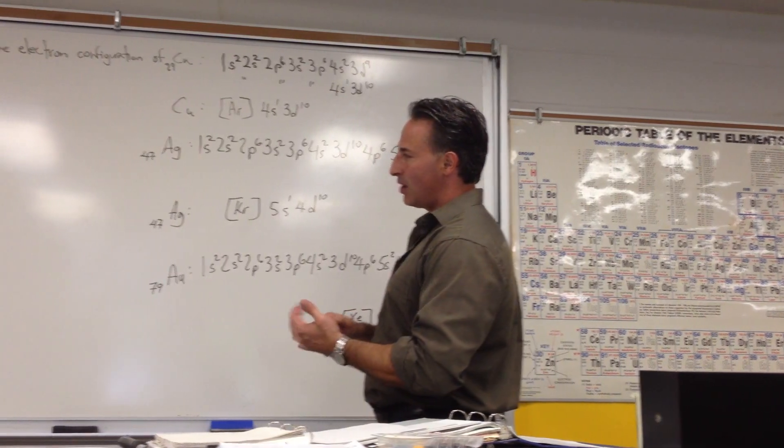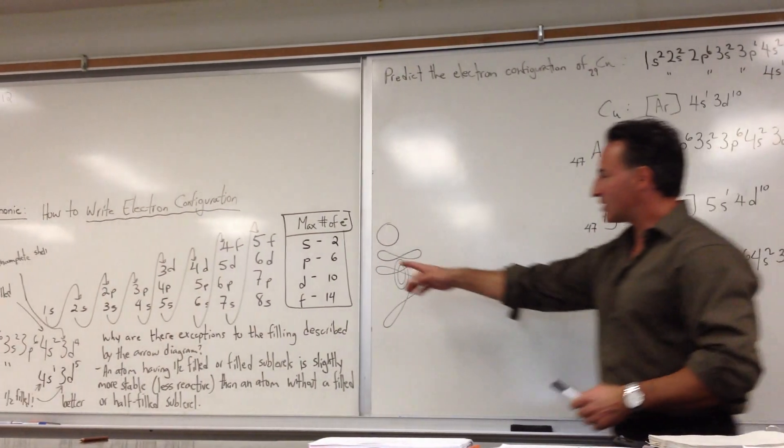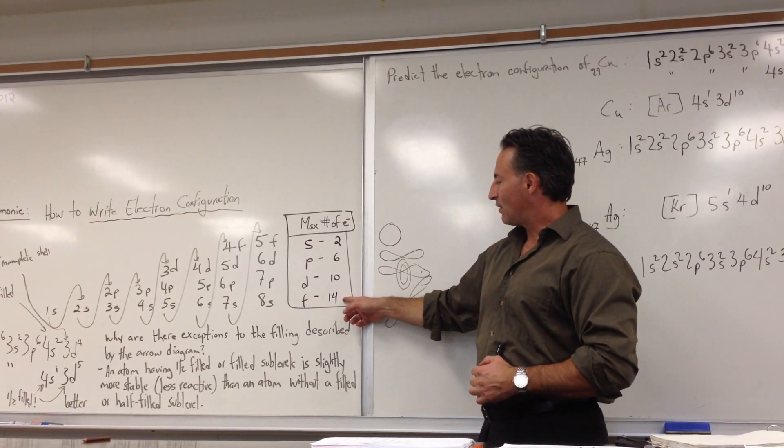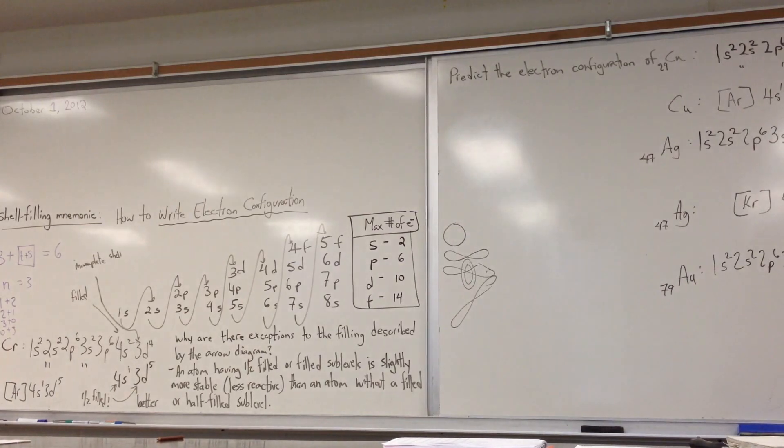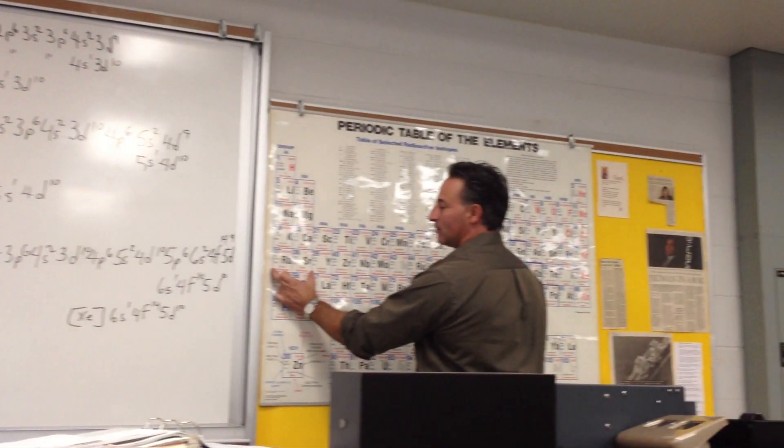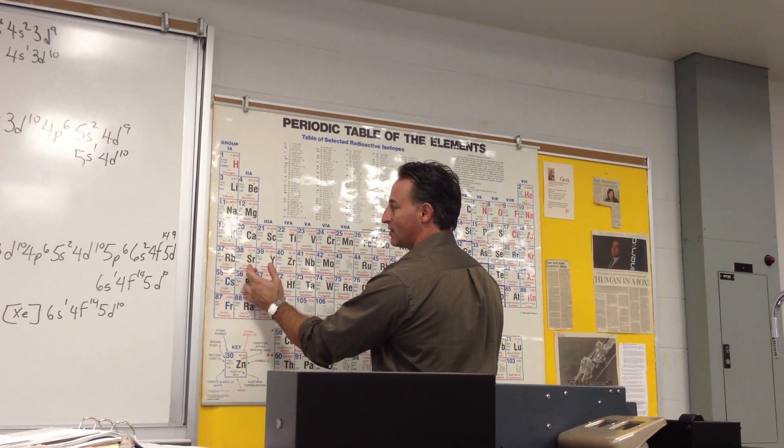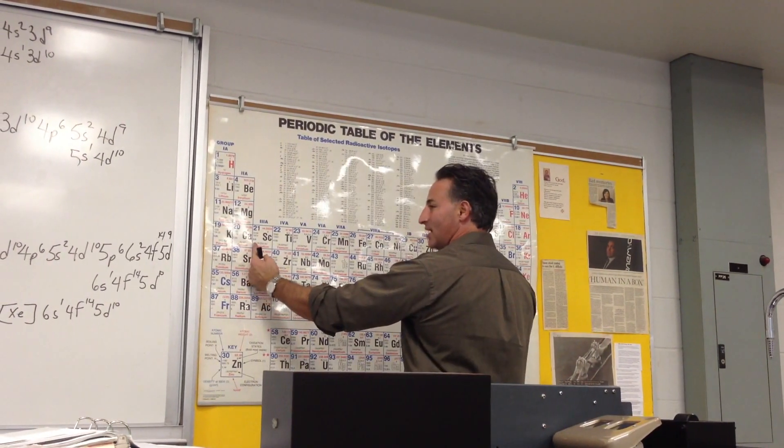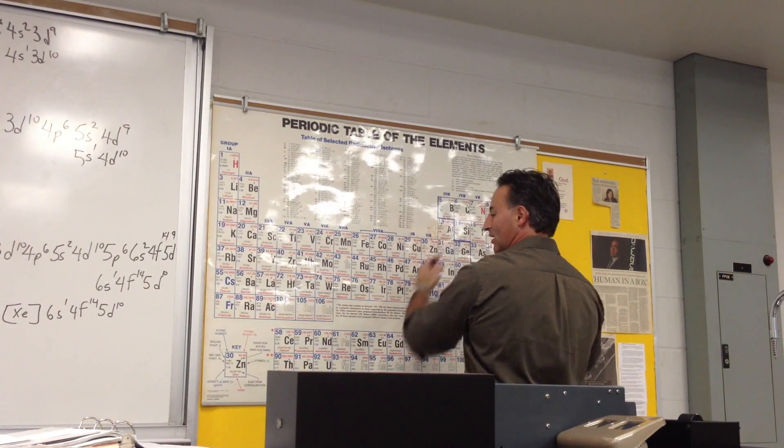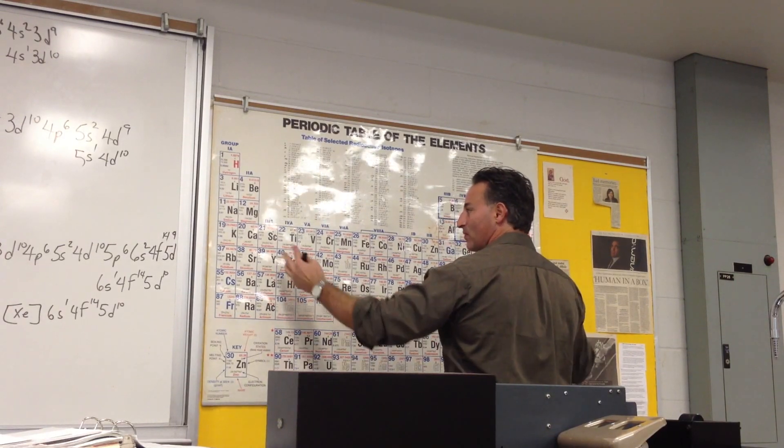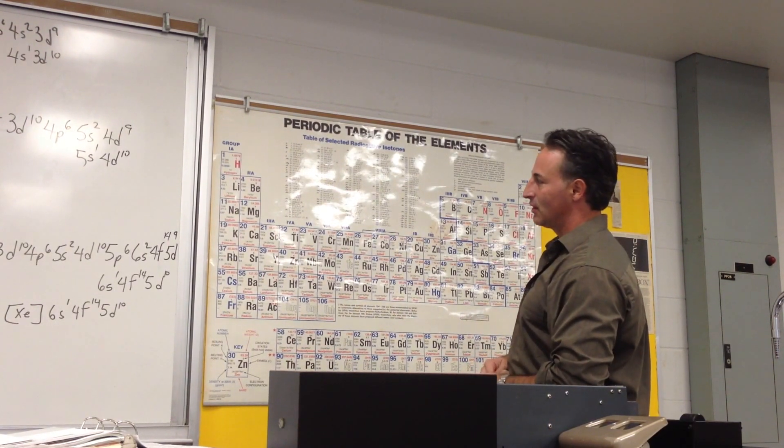Of course, keep in mind, s levels hold a maximum of 2, p levels hold a maximum of 6, d levels hold a maximum of 10, and f levels hold a maximum of 14 electrons. So I want you to notice a pattern in the periodic table. You'll notice that s block is two blocks wide because it takes only two electrons to fill an s shell. The d block is 10 blocks wide, because it takes 10 electrons to fill a d, 6 wide for p block, and 14 wide for f block. So the periodic table is arranged according to the filling of the sub-levels in the electrons.